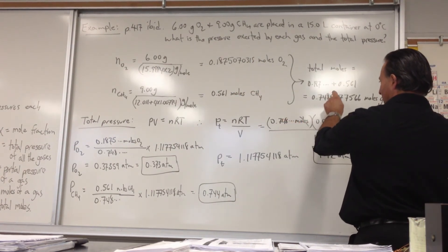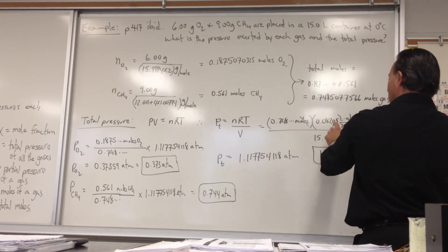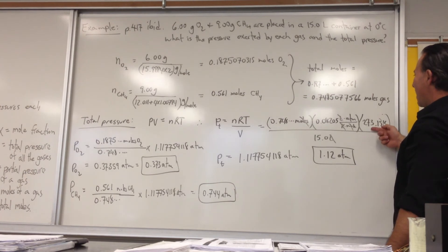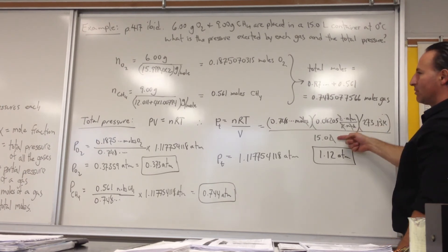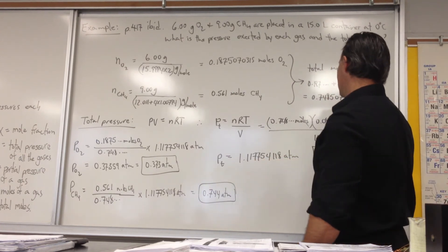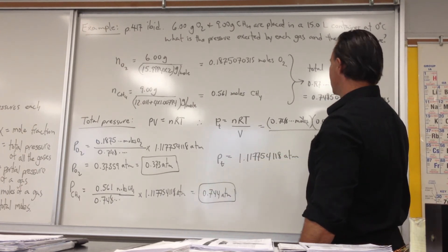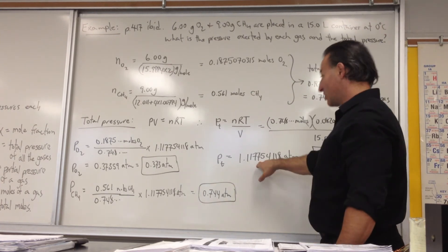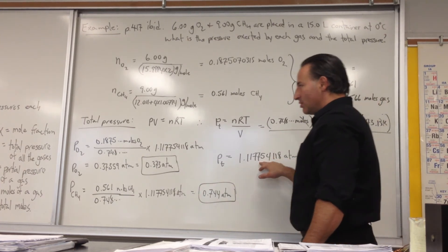We enter the total number of moles that we just calculated over here. The gas constant, 0.08205 liter atmospheres per Kelvin mole. The absolute temperature in Kelvin and the volume of the vessel. We get a total pressure of 1.1177. So we report it to three significant figures, 1.12 atmospheres. Then we continue our calculation with this number because we don't want to introduce rounding error.